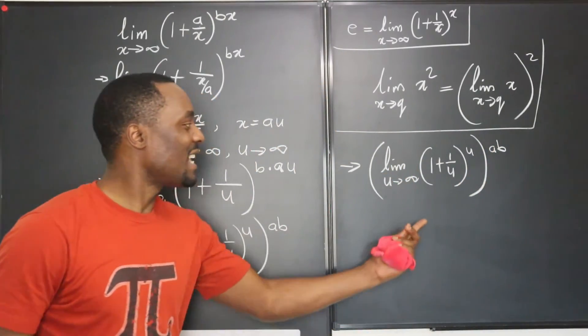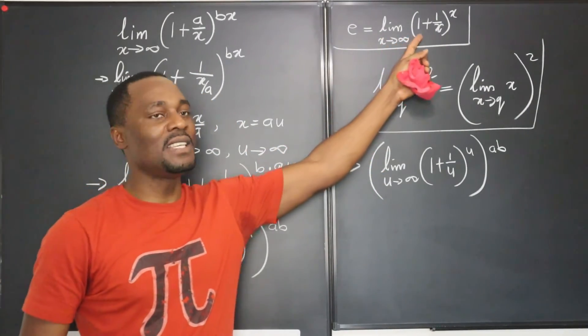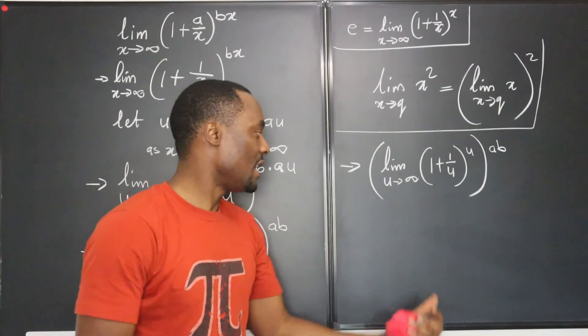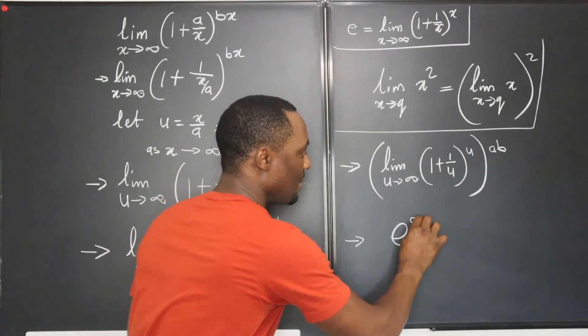Now we have established what is exactly defined as e. We just switched the x to u in this case. So this is e to ab.